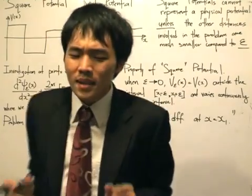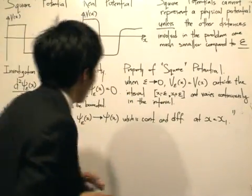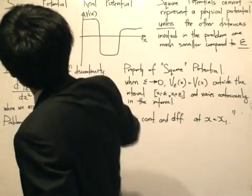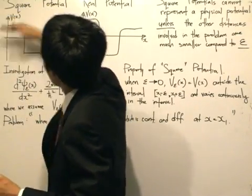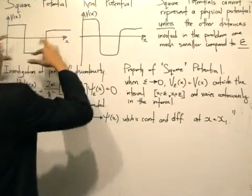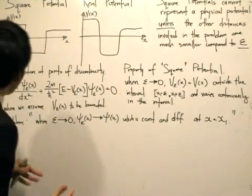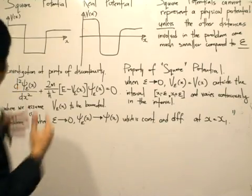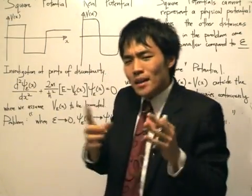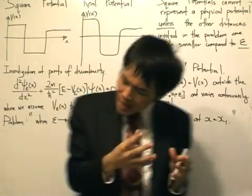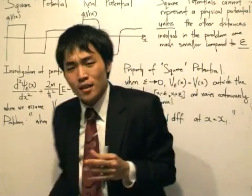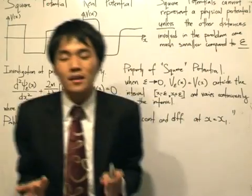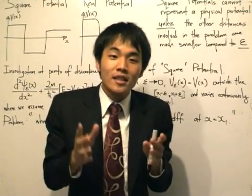For our problems, we will be dealing with things called square potentials. A square potential is given something like this. As you can see, for this domain of x, the potential is constant in certain regions. You can also see that there are points where the potential is discontinuous. An immediate question might be whether this square potential can represent a physical potential. The answer to that question is no.